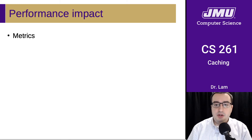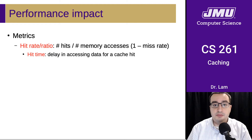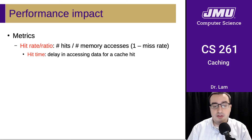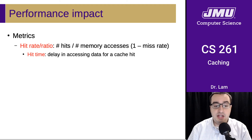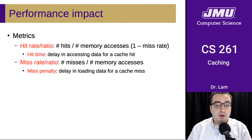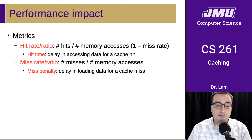What are the metrics we use to measure cache performance? One major one is the hit rate or hit ratio — the number of hits divided by the total number of memory accesses. We can also define a miss rate or miss ratio, which is the number of misses divided by the total number of memory accesses; these two values sum to one. We also define the hit time as the delay in accessing data for a cache hit, and similarly a miss time.